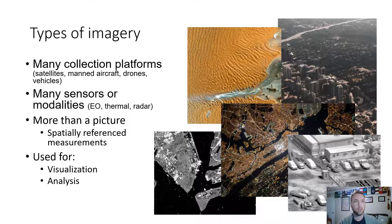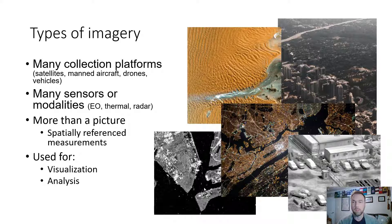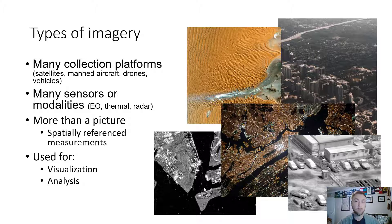Types of imagery that are collected: there are many different collection platforms — satellites, manned aircraft, drones — and many different types of modalities or sensors, including thermal, radar, electromagnetic, and traditional visual-light spectrum. These are more than photos — they are spatially referenced measurements. A photo taken with your phone doesn't account for the actual spatial dimensions of what it's viewing, whereas remote sensing satellites do. They take elevation and the electromagnetic signature into account, making it a lot more than just a picture. These are used for both visualization and spatial analysis.